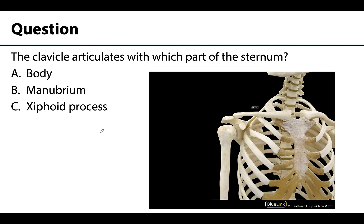Question: the clavicle articulates with which part of the sternum — the body, the manubrium, or the xiphoid process? The key is that the clavicle is superiorly placed, so it makes sense that it articulates with the superiormost portion of the sternum, which is the manubrium. The correct answer is the manubrium, at the clavicular notches. While costal cartilages do articulate with the body and xiphoid, the clavicle only articulates with the manubrium.